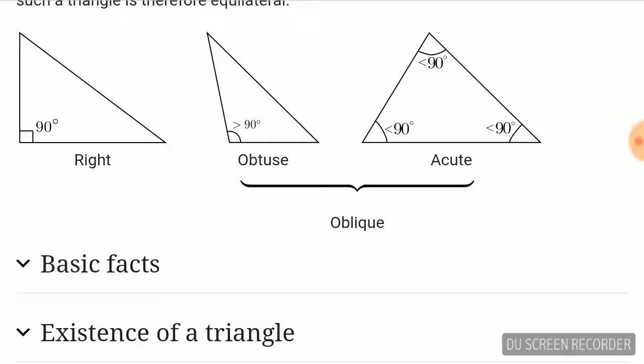The first diagram shows a 90 degree right angle triangle, the second one is more than 90 degrees — an obtuse triangle, and the third one is less than 90 degrees — that is called an acute triangle. Obtuse triangle and acute triangle are also called oblique triangles.